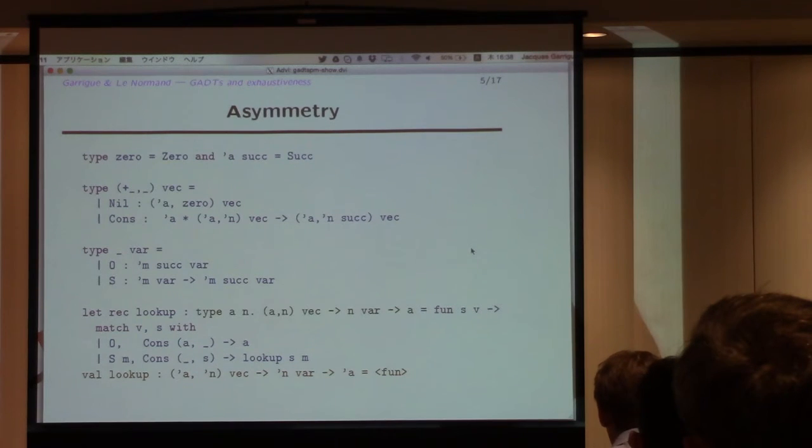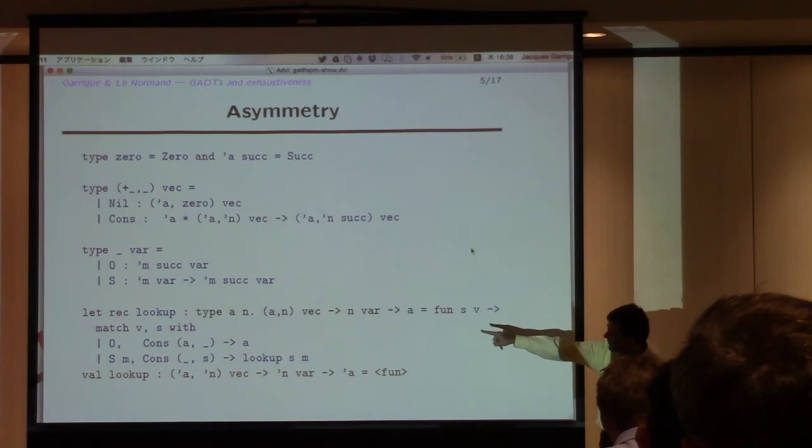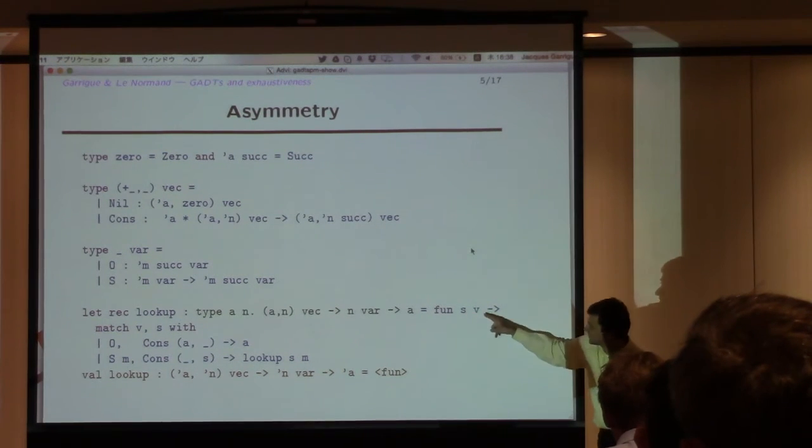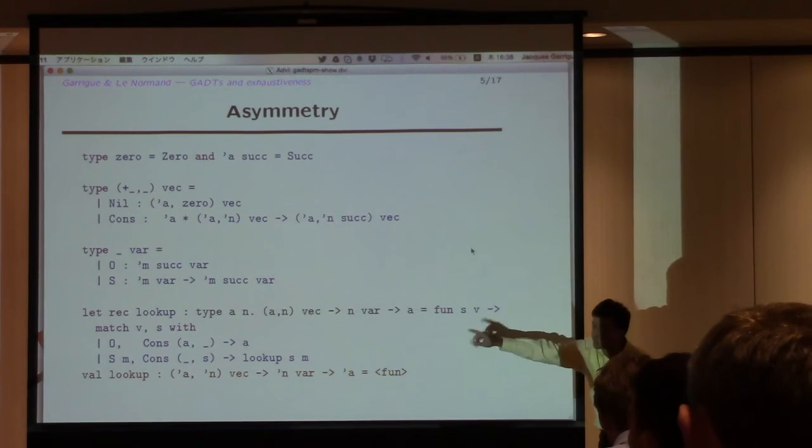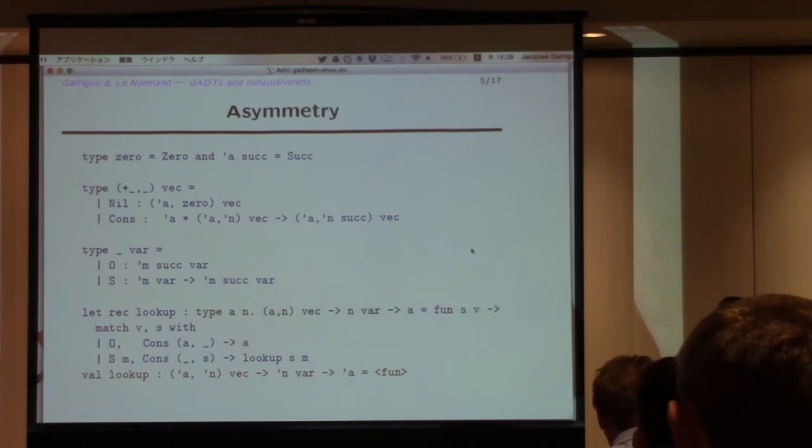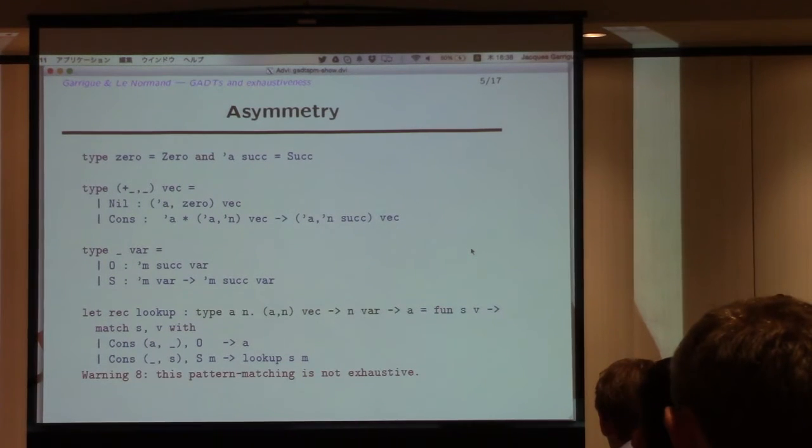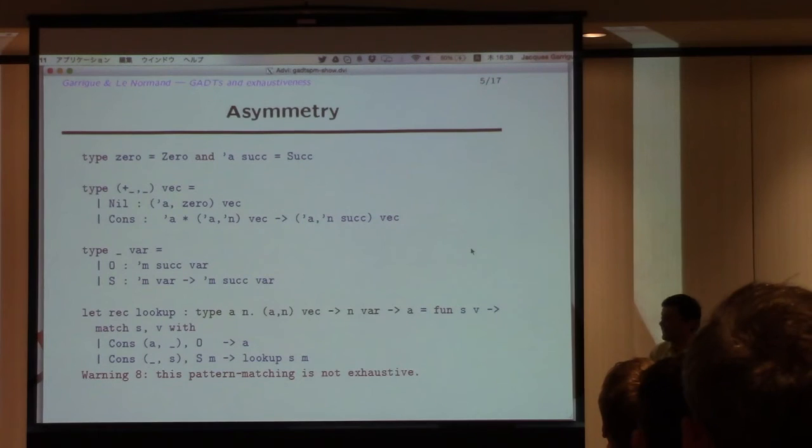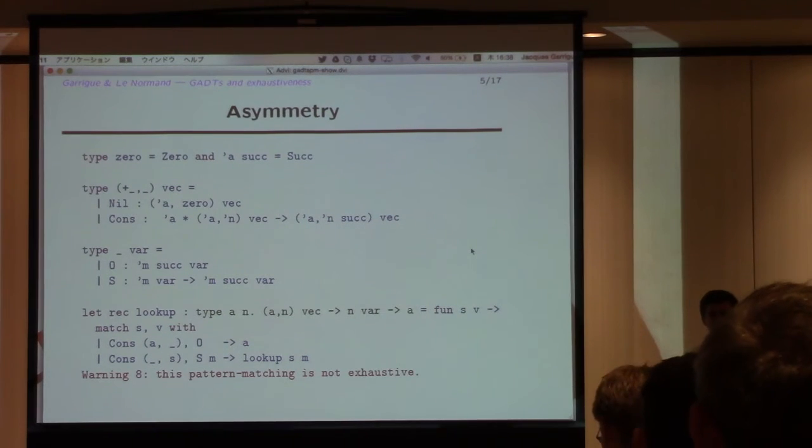But maybe you realize that there's something like this pattern matching. I'm receiving my context and my variable, so first the context, which is the sequence, and the variable. But then, I start matching in the opposite order. Why so? Because in the current version of OCaml, if I change the order, it tells me that it's not exhaustive. So type checking goes through, but it tells me that it's not exhaustive.